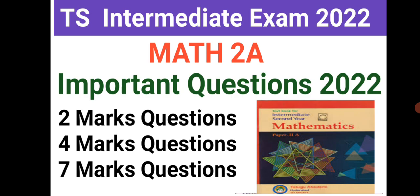All the links for 2A, 2B, Mathematics, Physics, Chemistry are given in the description for 2 marks for Mathematics 2A, 4 marks for Mathematics 2A, and 7 marks for Mathematics 2A.